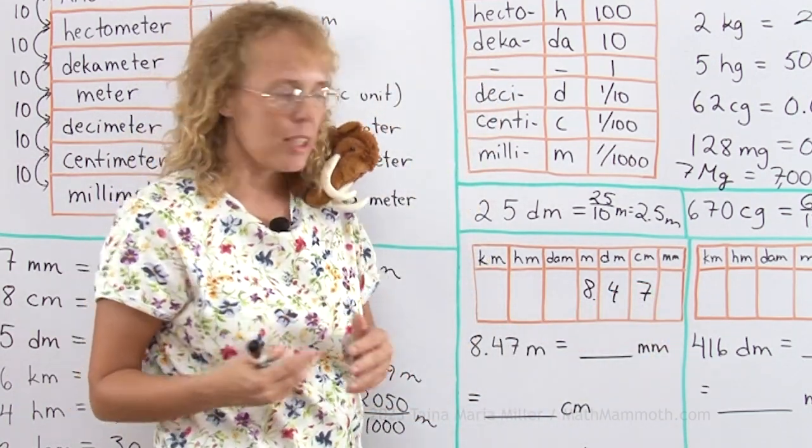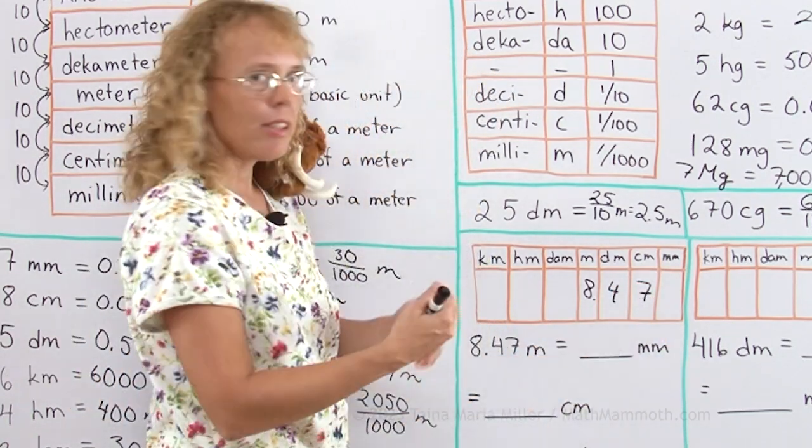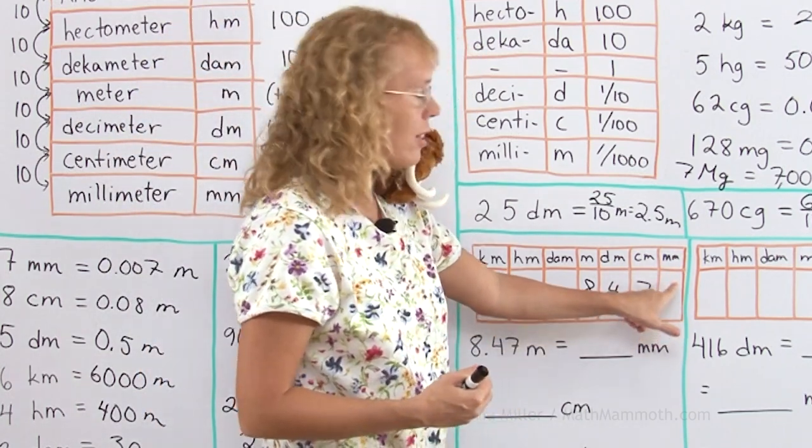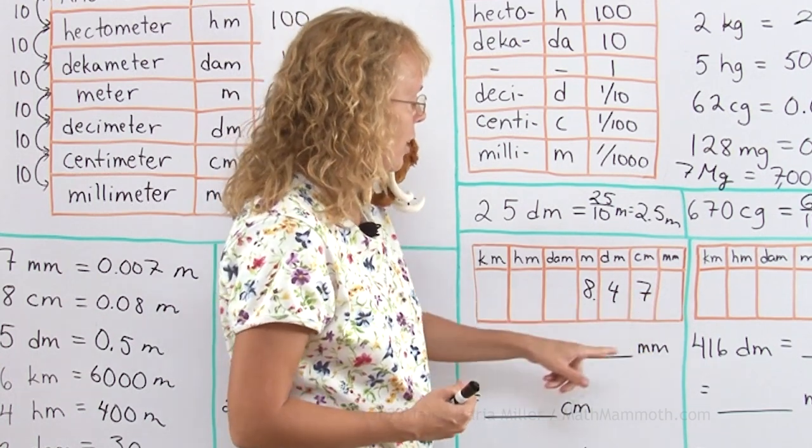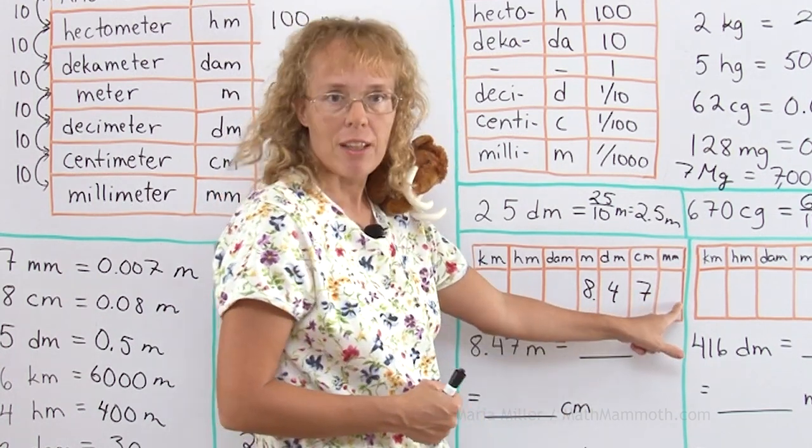Now when I convert it to millimeters, I will read it here as if the basic ones place was here. This was ones, tens, hundreds and so on. It is as if the decimal point moved here after millimeters.